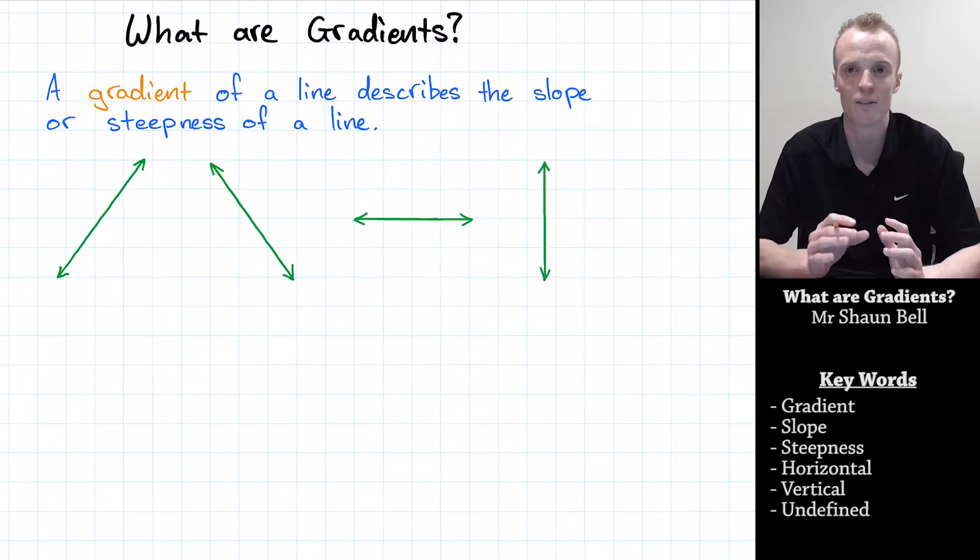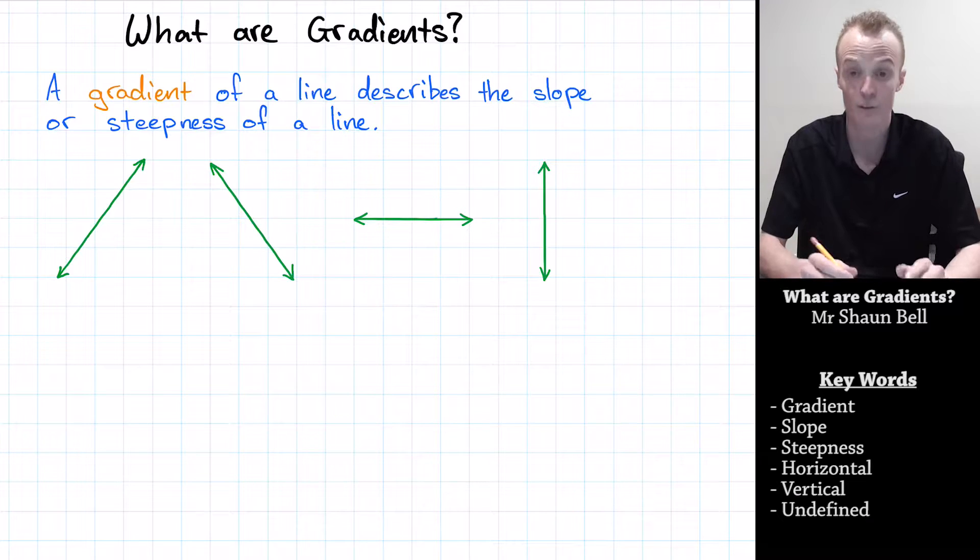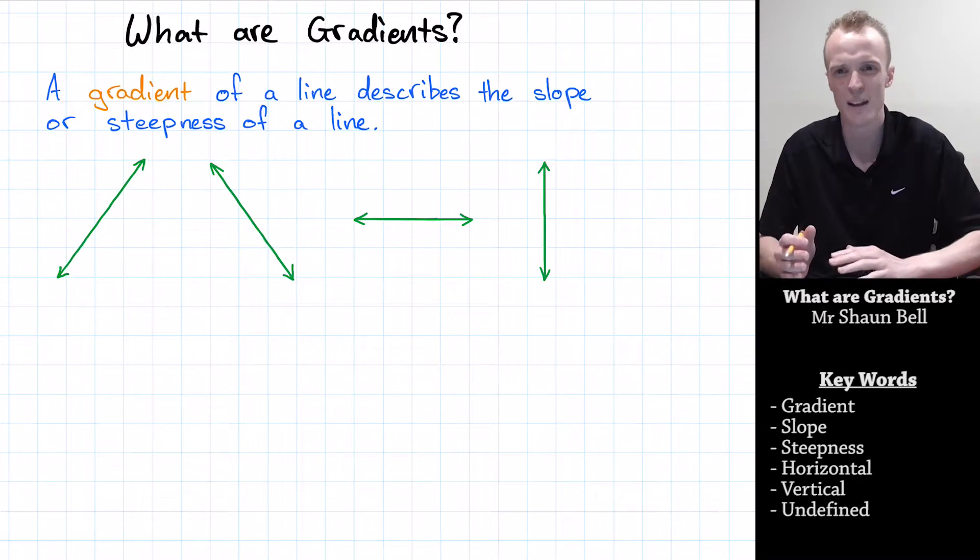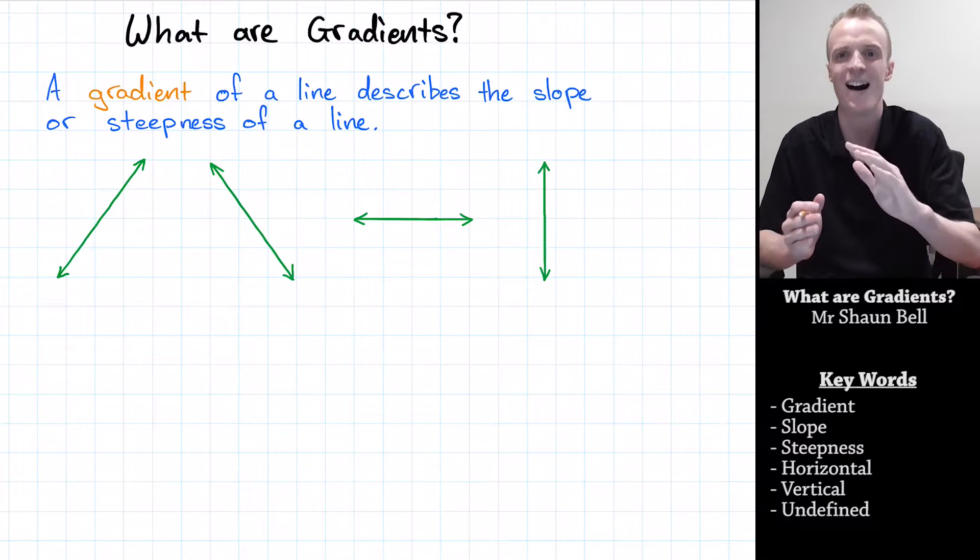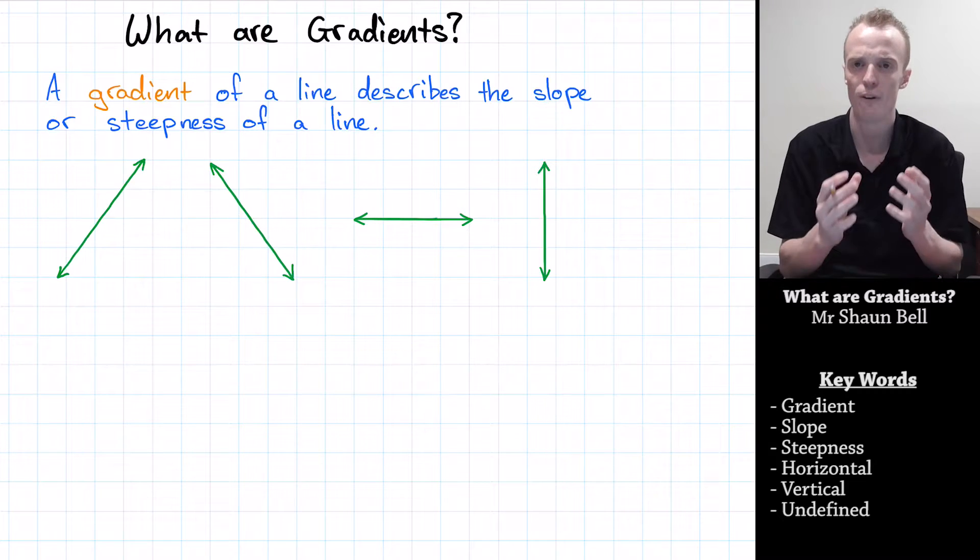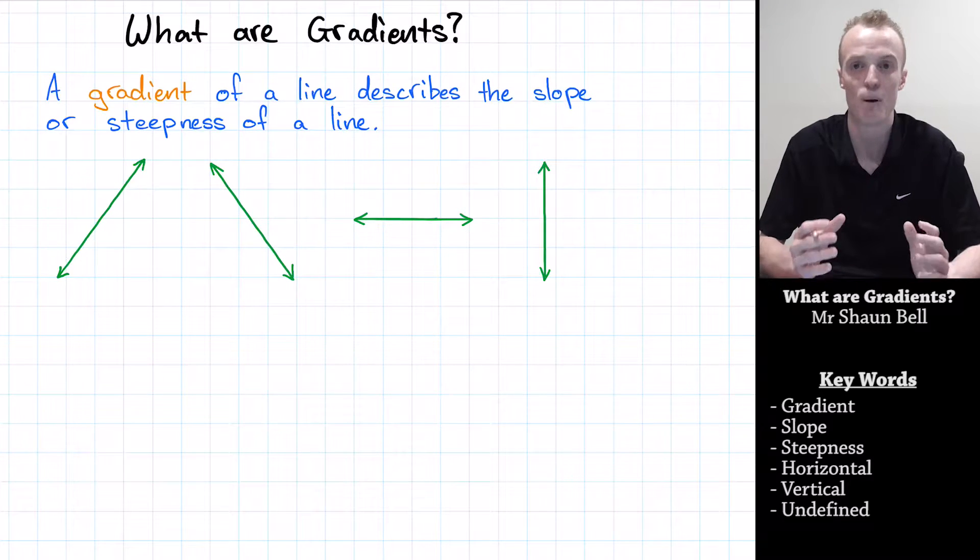When describing gradients, I like to think about gradients by reading them from left to right. In our first line here, when we read this from left to right, we're going uphill. When we're climbing uphill in our gradient, we refer to that as a positive gradient, and we give this a positive value.